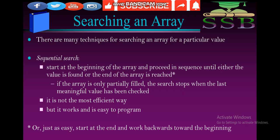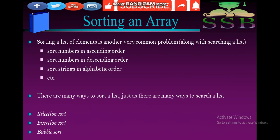How sequential search works: start at the beginning of the array and proceed in sequence until either the value is found or the end of the array is reached. It is not the most efficient way, but it works and is easy to program for beginners. You can also start at the end and work backward toward the beginning, repeating to find any particular element.